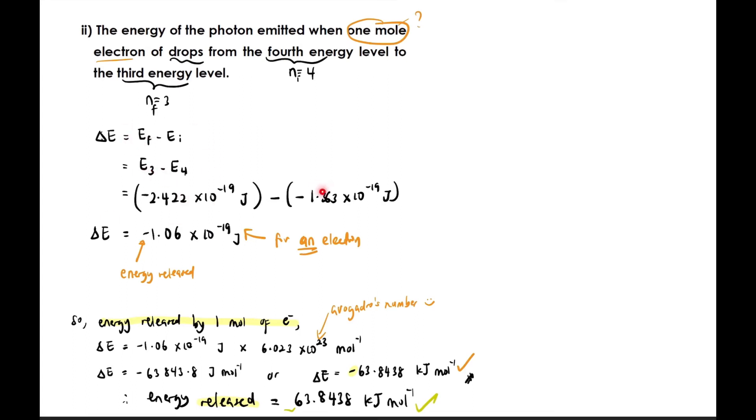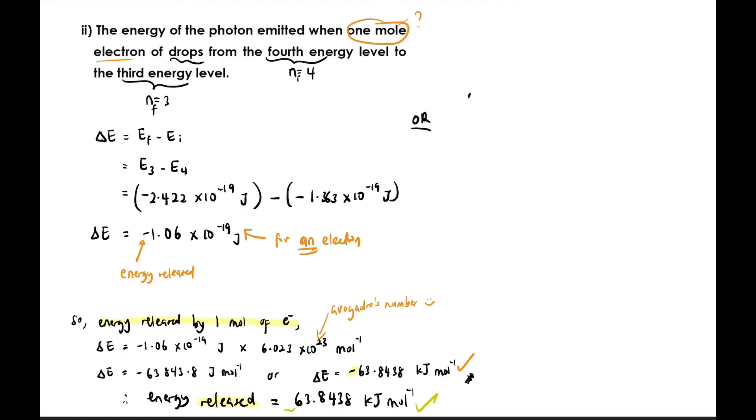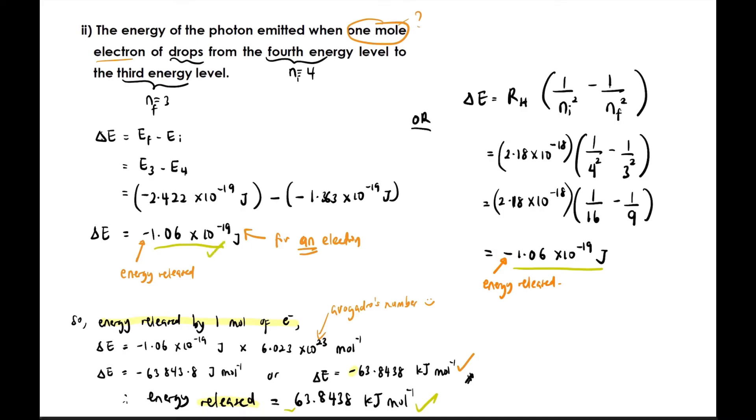Earlier we directly used the values of E3 and E4 that we calculated in question 1. But what if we haven't calculated them separately? We can simply use the formula delta E equals RH times one over n initial squared minus one over n final squared, which we learned earlier. We know who our initial and final are. Substitute the values: RH is 2.18 times 10^-18, one over 4 squared because 4 is initial, and one over 3 squared because 3 is final. Let the calculator work, but be careful with brackets to get the correct answer. The answer is exactly the same as the other method: negative 1.06 times 10^-19 joules. Negative means energy released, so you can simplify by just writing 'energy released equals' the value without the negative sign.